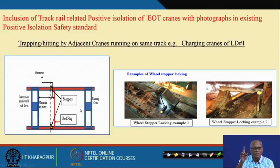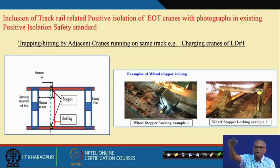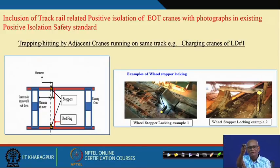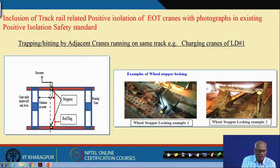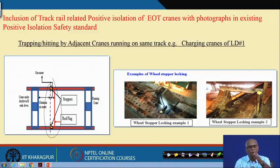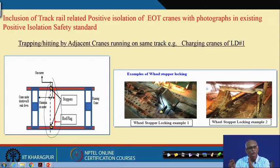For EOT cranes — which move on long travel rails — you need not block the entire length. You block a certain section and other people work on the other side. Workers put stoppers on the rails and put a lock. Why a lock? Because otherwise anybody can remove the stopper — positive isolation means the stopper cannot be removed without the key. This is positive isolation for EOT crane movement.